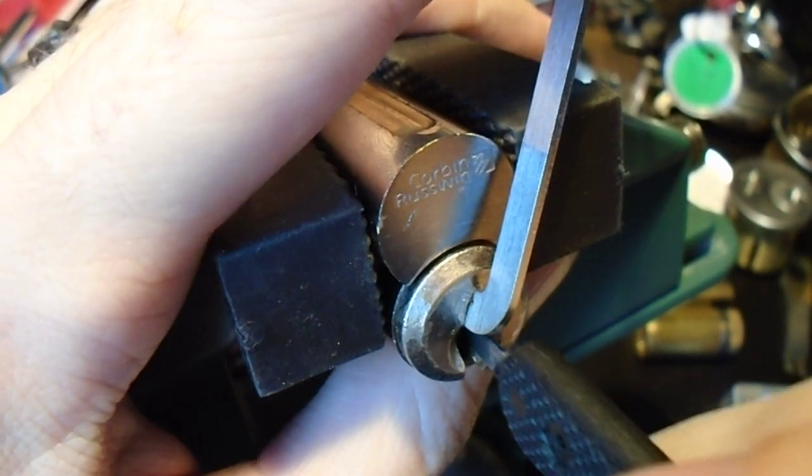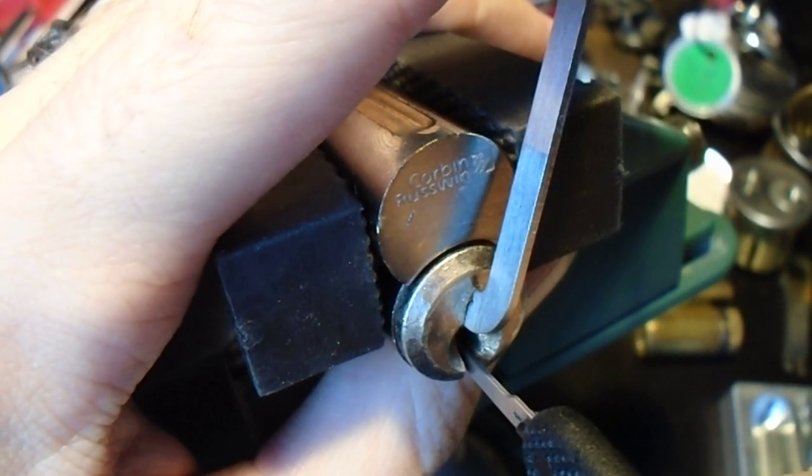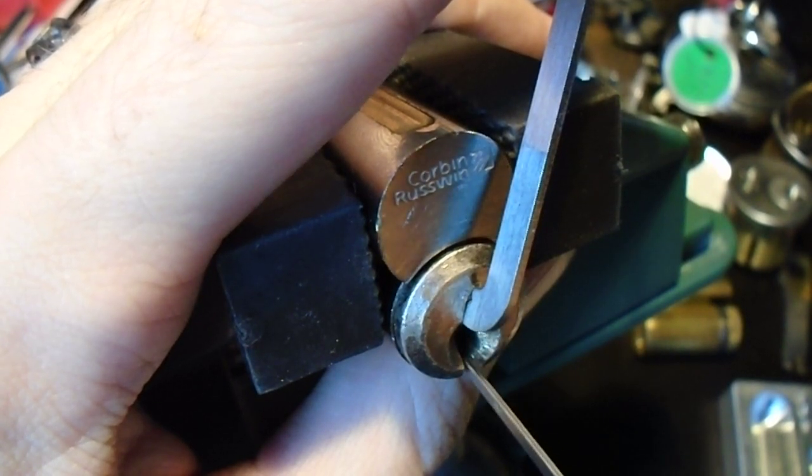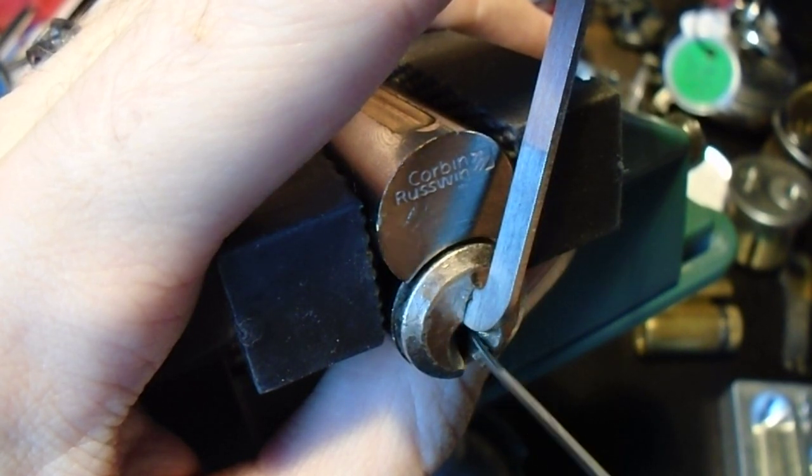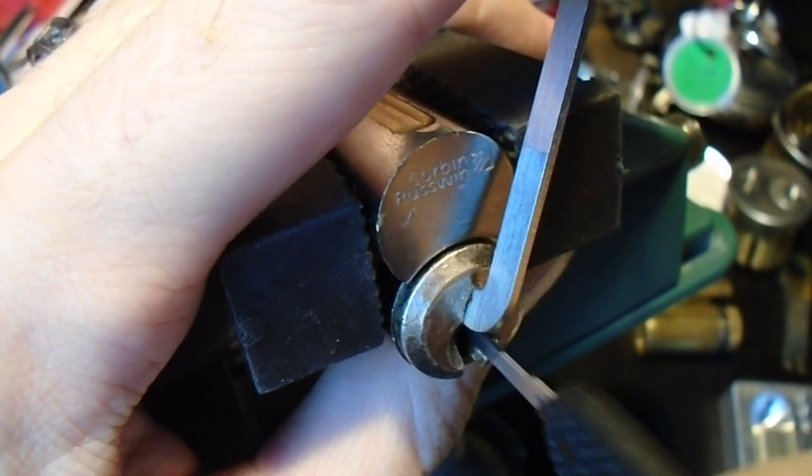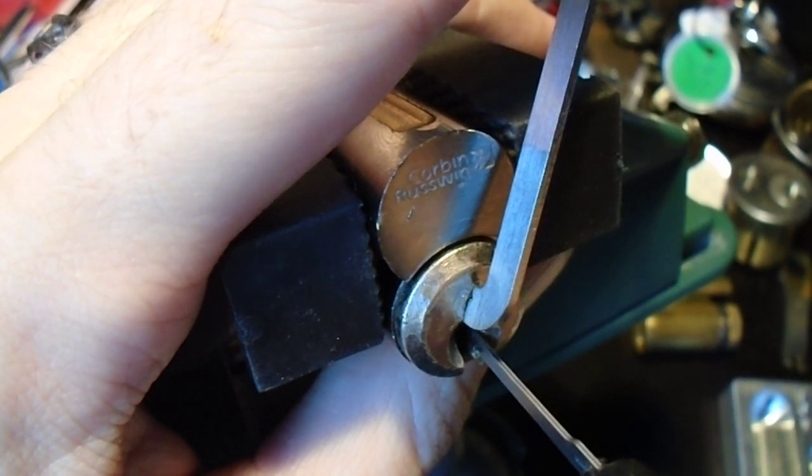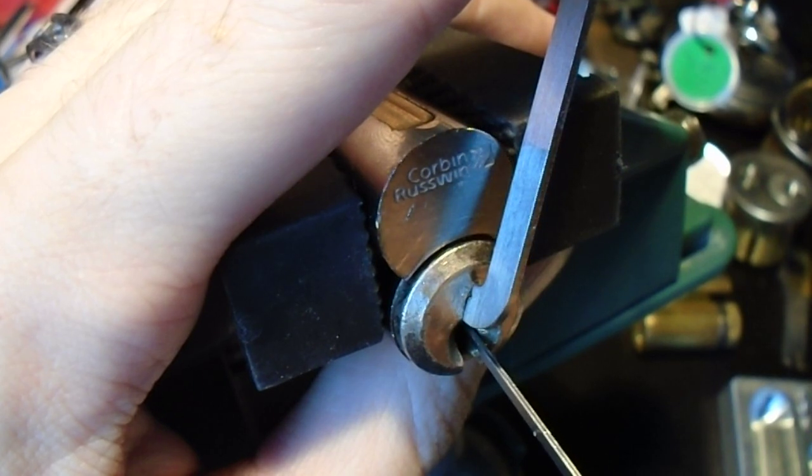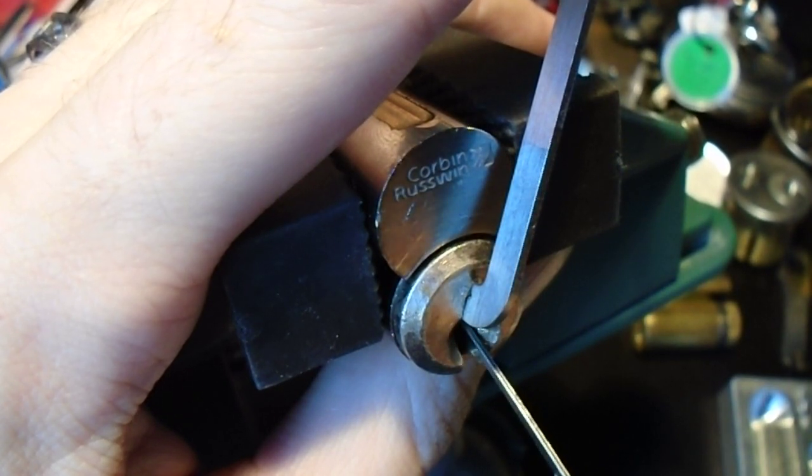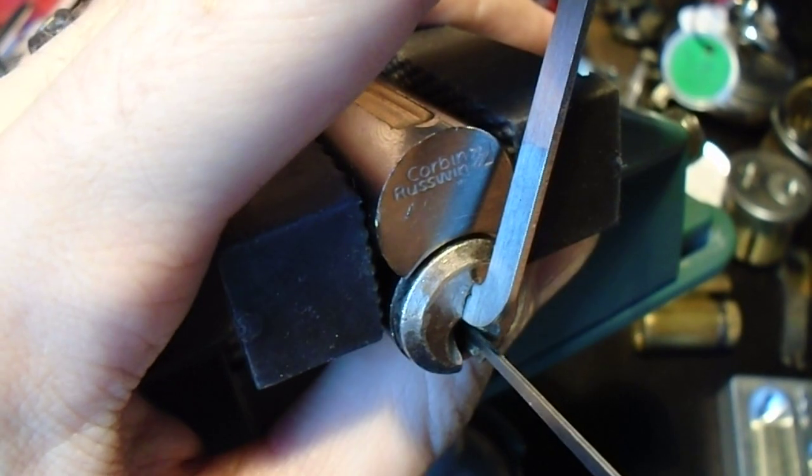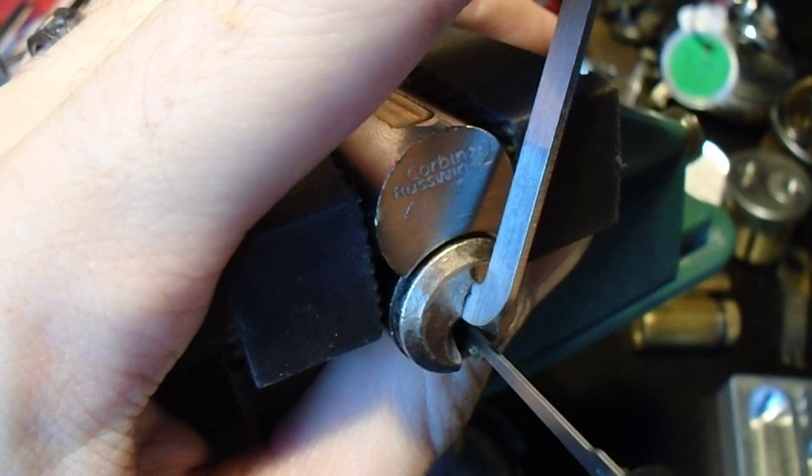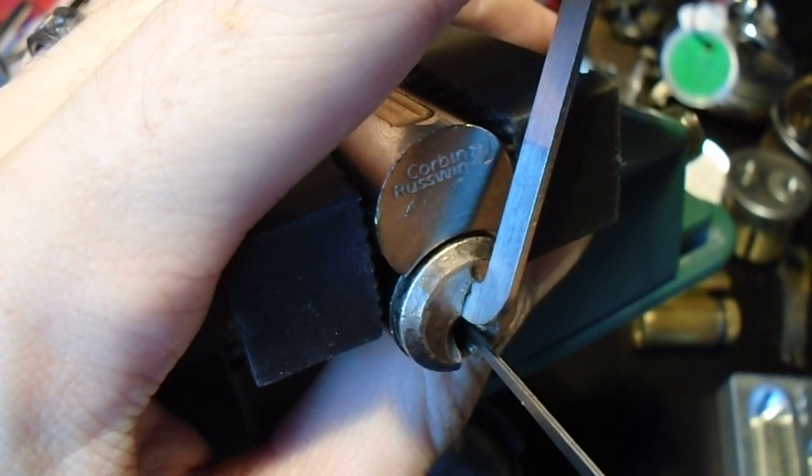And I'm going to try starting from the back. And it sounds like we've already set one pin. And of course this is a wide enough keyway that the pick can actually fall down below the warding, so we have to be careful about that. Okay, so that's pin one. Let's see. I think we've got pin three just set.